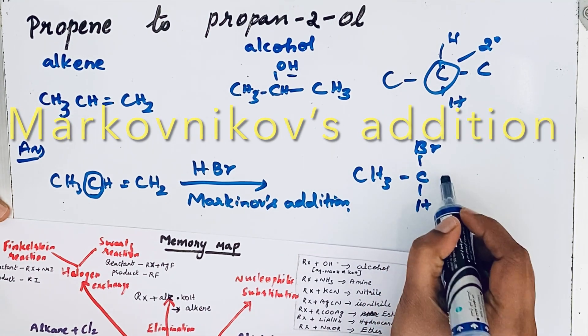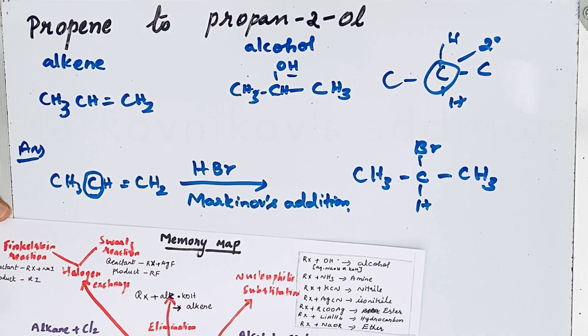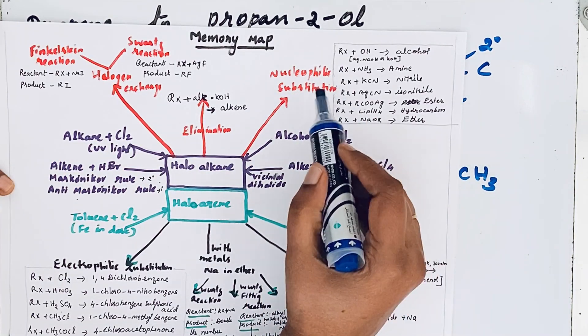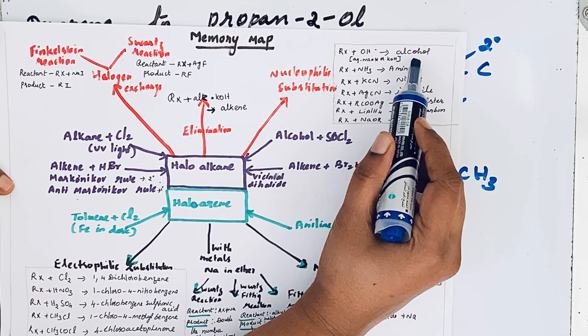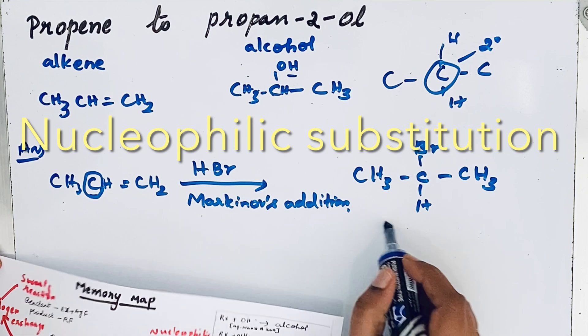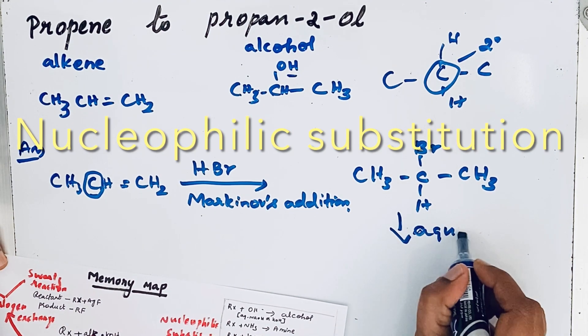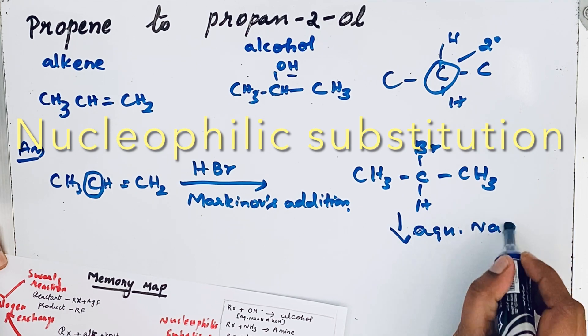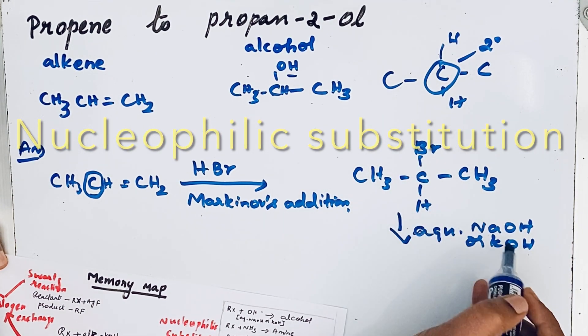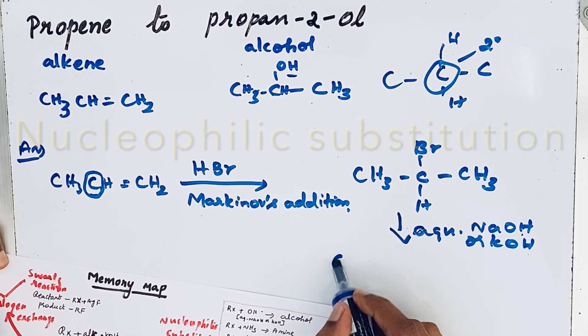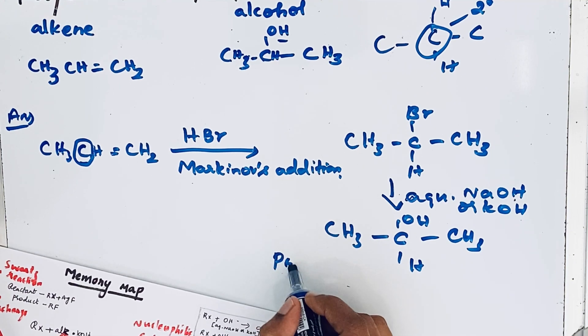Now we can make the compound undergo nucleophilic substitution to get the same product, that means alcohol. Nucleophilic substitution with NaOH or KOH. Then Br will be replaced by OH: CH3-CHOH-CH3. What is the compound? Propan-2-ol.